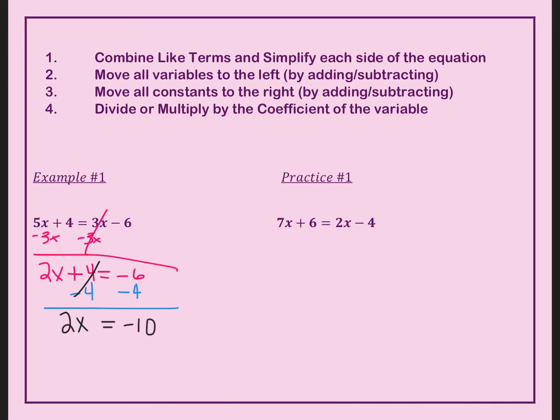Now that I've moved that 4, notice that all my x's are on the left and all my constants are on the right. Right now these are being multiplied, so in order to eliminate the 2, I'm going to divide by 2. 2 divided by 2 is 1, and I now have x by itself, and then the answer is -5.